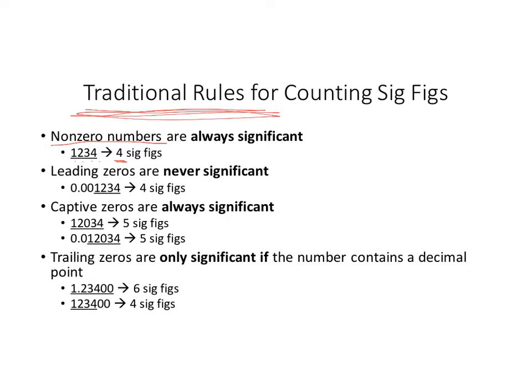The next rule is that leading zeros are never significant. Any zeros that appear in front of non-zero numbers are never going to be significant — they are placeholders but not significant, so still just four sig figs there. Captive zeros are always significant. A captive zero is a zero that is trapped between two non-zero numbers, like between the two and the three. So those are significant, and counting all digits gives five sig figs for both of those examples.